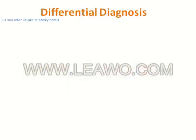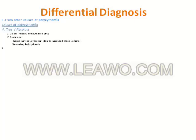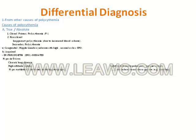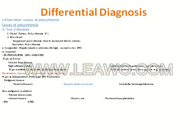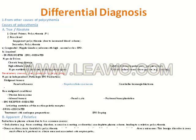Differential diagnosis: this long list shows the differential diagnosis of a patient with polycythemia vera. We have to differentiate polycythemia vera from other causes of polycythemia and from other myeloproliferative neoplasms according to this list.